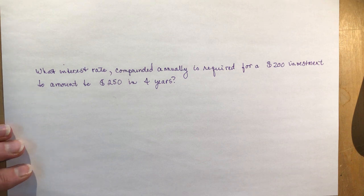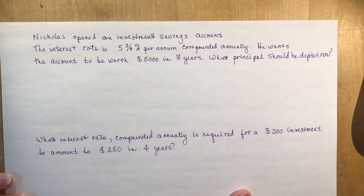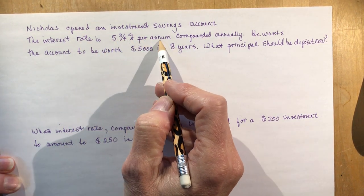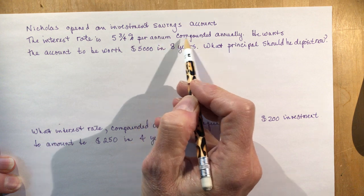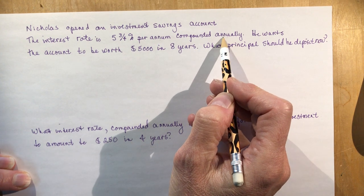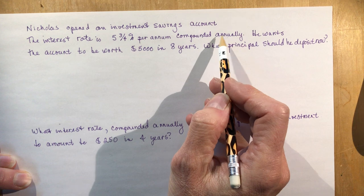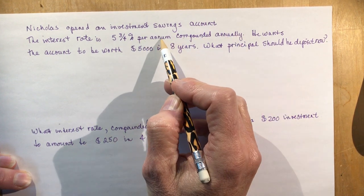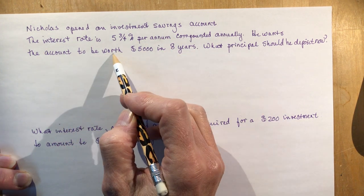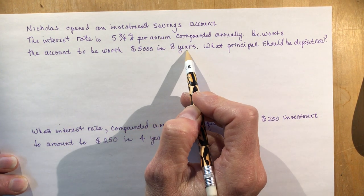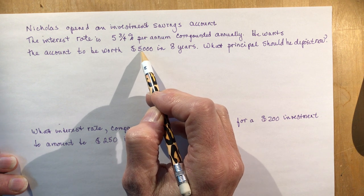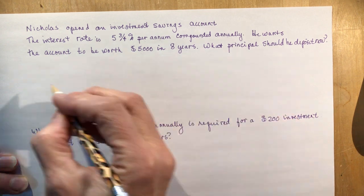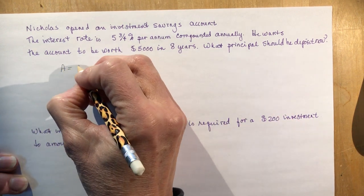Let's go to another word problem. Nicholas opened an investment savings account with an interest rate of 5 and three quarters percent per annum, compounded annually. He wants the account to be worth $5,000 in eight years — that's future value. What principal should he deposit now? Let's write out our equation: A equals P times (1 + i) to the N.